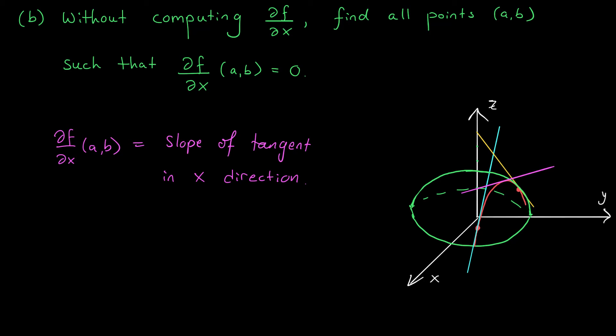Of course, there's nothing really special about this particular cross-section. We could have taken any cross-section by setting y equal to some k value, and the point right in the middle above the y-axis is going to give us a zero partial derivative with respect to x. So really, the points that we're looking for are the points below this ridge going over our sphere. They're the points with x-coordinate equal to zero and whose y-coordinate can be anything between this point over here and this point over here.